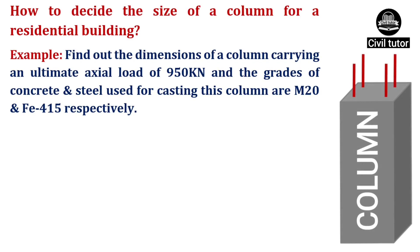Now, coming to the main topic, suppose we need to find out the dimensions of a column carrying an ultimate axial load of 950 kN and the grades of concrete and steel used for casting this member are M20 and FE415 respectively.